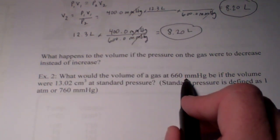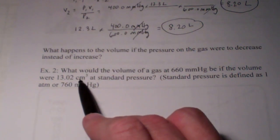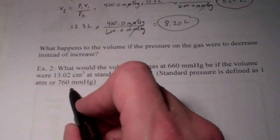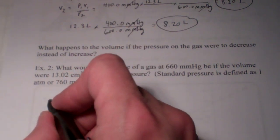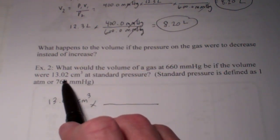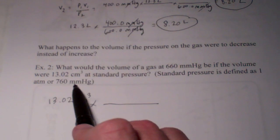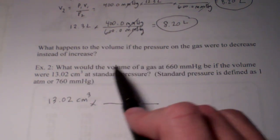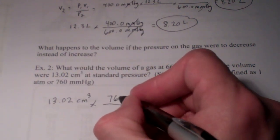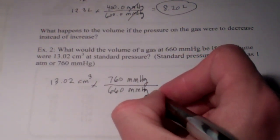So let's take a look. What would the volume of a gas at 660 millimeters of mercury be if the volume were 13.02 cubic centimeters at standard pressure? Now, standard pressure is defined as either 1 atmosphere, or as you recall, 760 millimeters of mercury. So the volume I'm going to begin with is 13.02 cubic centimeters. Now, that was the volume at standard pressure, at 760. Now, I want to find out what the volume will be if the pressure were dropped. So think about this. If pressure goes down, inverse to that would be volume getting bigger. So I'm going to put the bigger number on top, because that makes my proportionality, or my fraction, bigger.